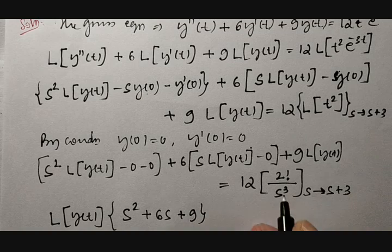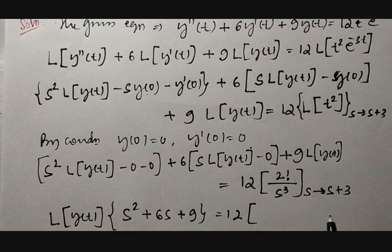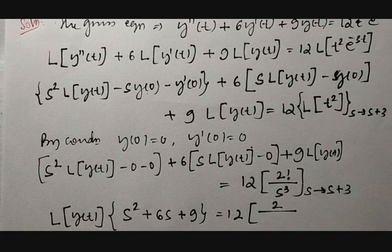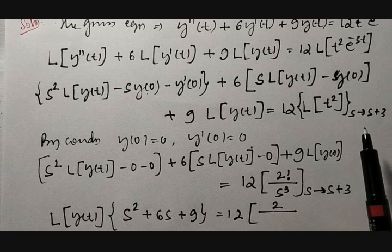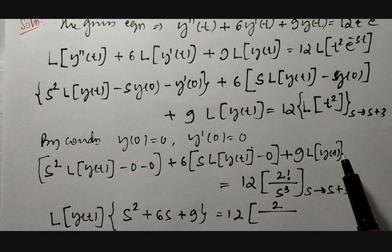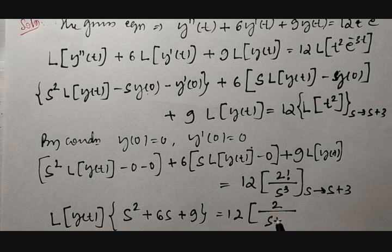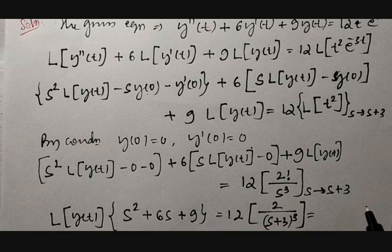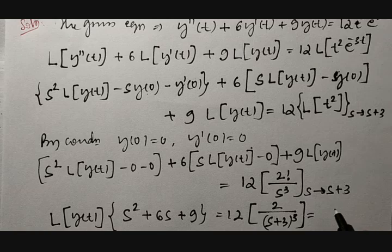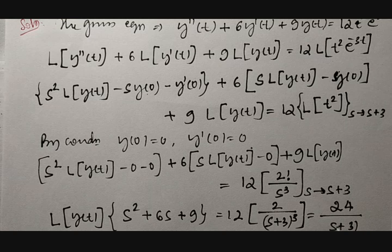The right-hand side equals 12 · [2! / (s+3)³]. Since 2! = 2 and we utilize the exponential term e^{-3t} via the shifting property, s is replaced by s + 3. So this becomes 2 × 12 = 24, divided by (s + 3)³.